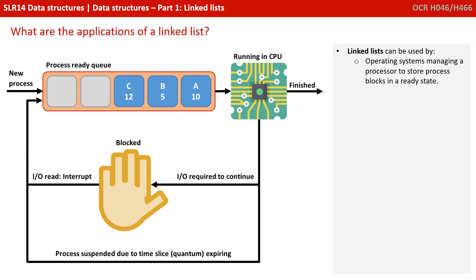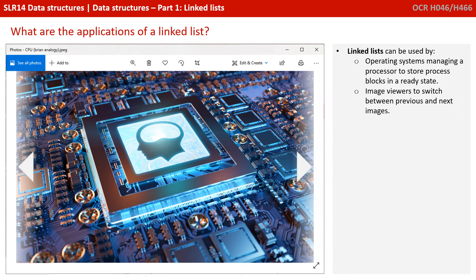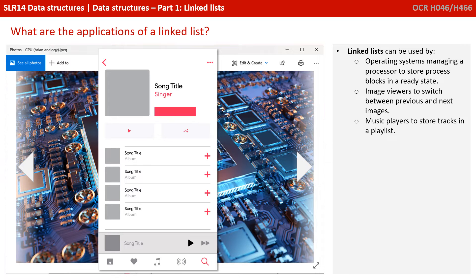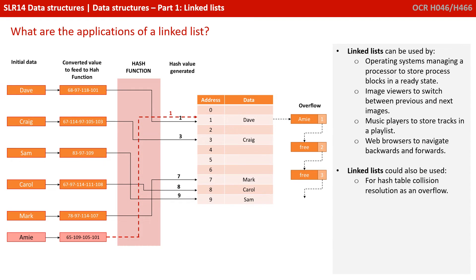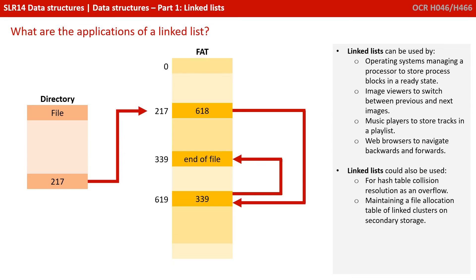Linked lists can be used in many situations, so here are some examples. Operating systems managing a processor to store process blocks in a ready state. Image viewers to switch between previous and next images. Music players to store tracks in a playlist. Web browsers to navigate backwards and forwards through a list of visited pages. Linked lists could also be used for hash table collision resolution as an overflow, which we'll look at in our video on hash tables later. And maintaining a file allocation table of linked clusters on secondary storage.